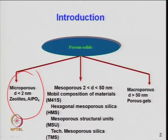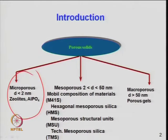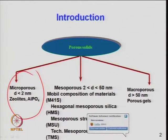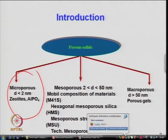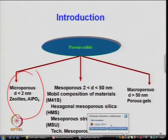Mesoporous materials are also micro-crystalline — MCM-type materials or zeolite ZSM-5 — with pore size between 2 and 50 nanometers. Mobile composition materials include different coded materials like M41S, hexagonal mesoporous silica (HMS), and mesoporous structure units (MSU), which are technically mesoporous silica.